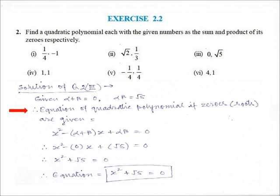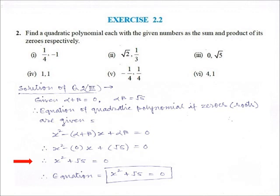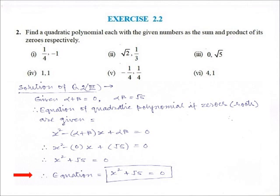Therefore, the equation of the quadratic polynomial, if zeros (that is, roots) are given, is x² minus (alpha plus beta)x plus alpha·beta is equal to 0. Putting the values, we get x² minus 0·x plus √5 is equal to 0. Therefore, x² plus √5 is equal to 0. Therefore, the equation is x² plus √5 is equal to 0.